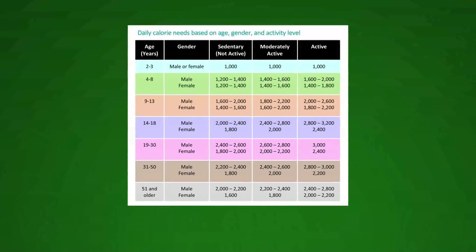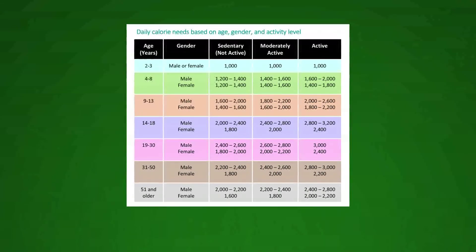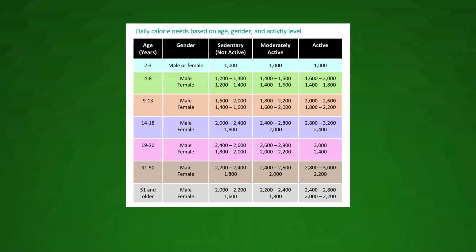For example, walking to school is an example of being moderately active. Playing a game of basketball is an example of being vigorously active.